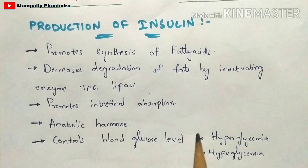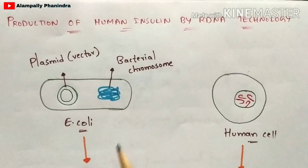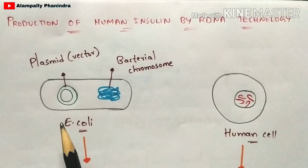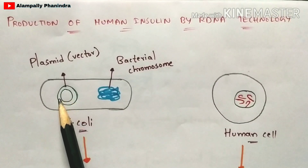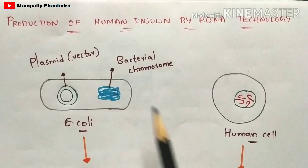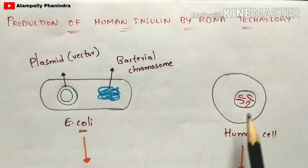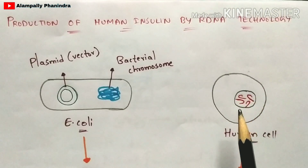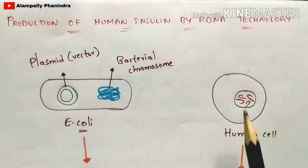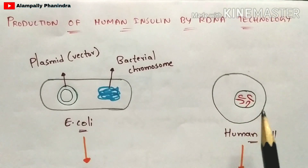Now let us see how insulin is produced by recombinant DNA technology. The first step is to select an E. coli cell. In this E. coli cell there is a plasmid, also called a vector, as well as the bacterial chromosome. On the other hand, you take a human cell. In this human cell there is an insulin hormone, and within that insulin hormone there is an insulin gene.